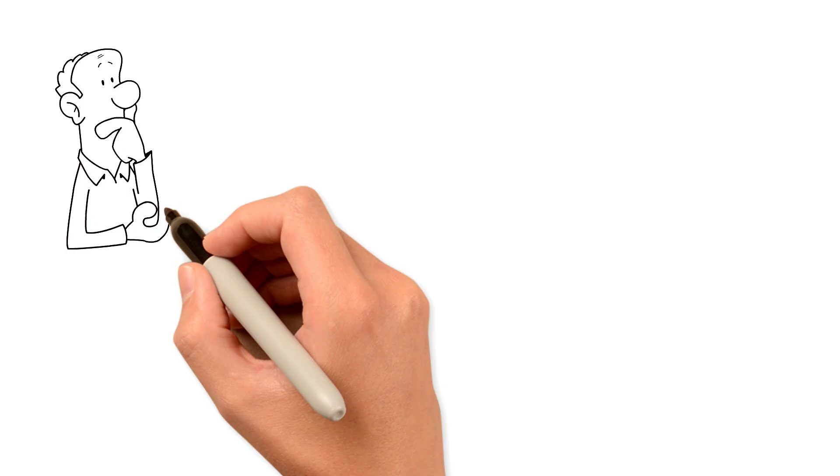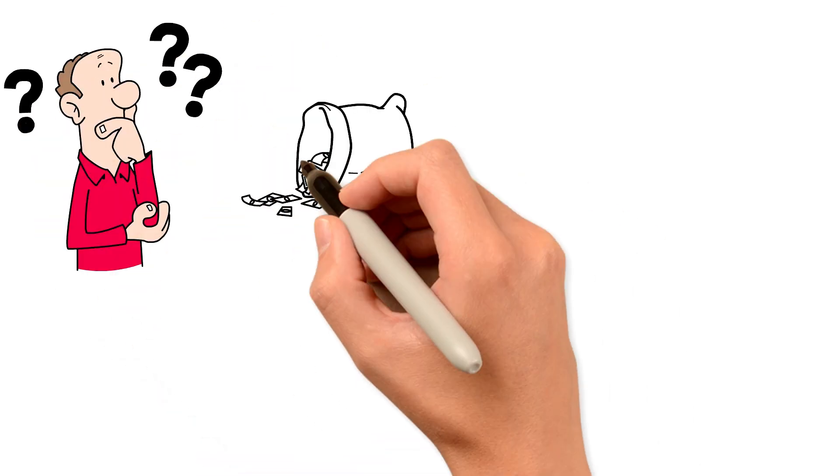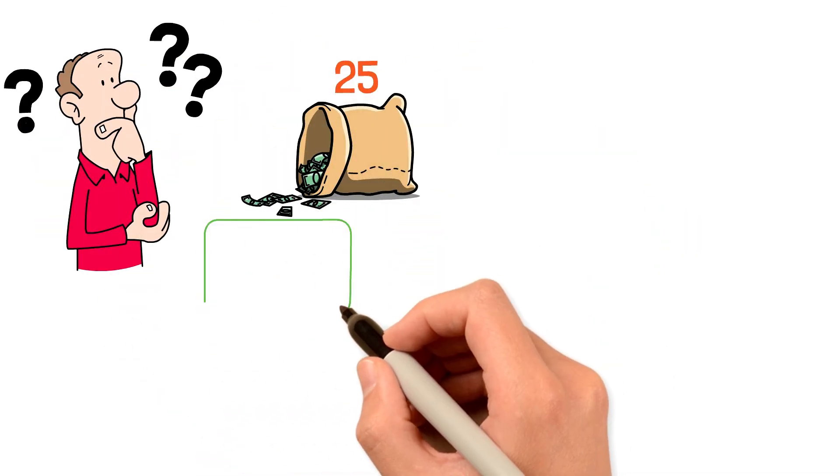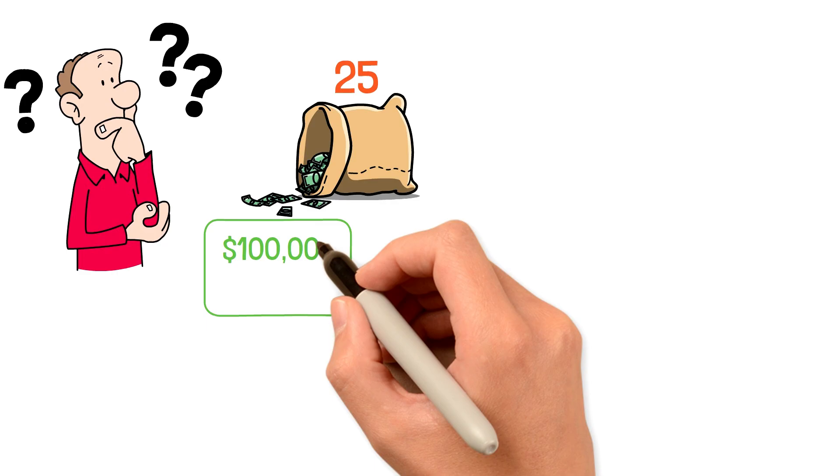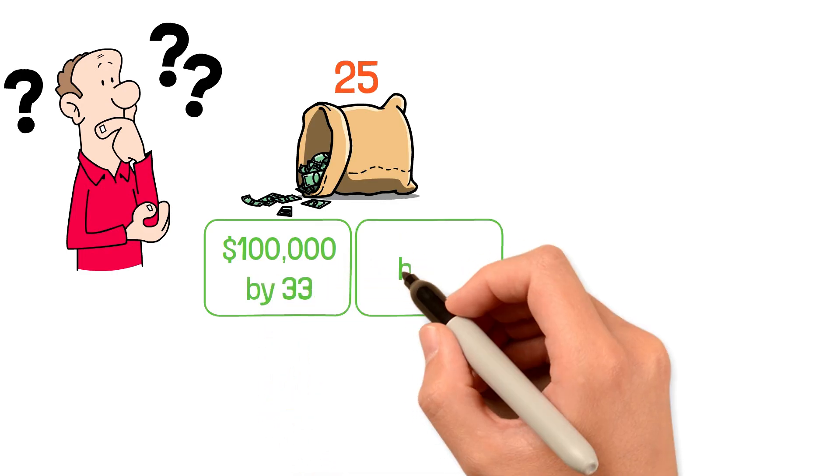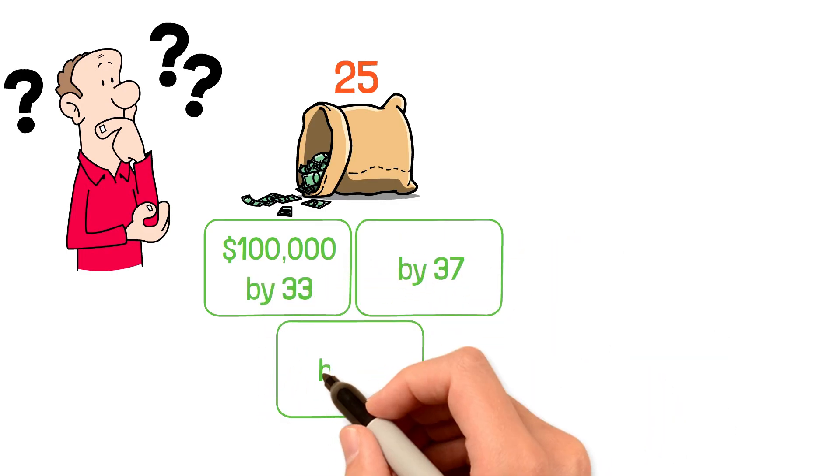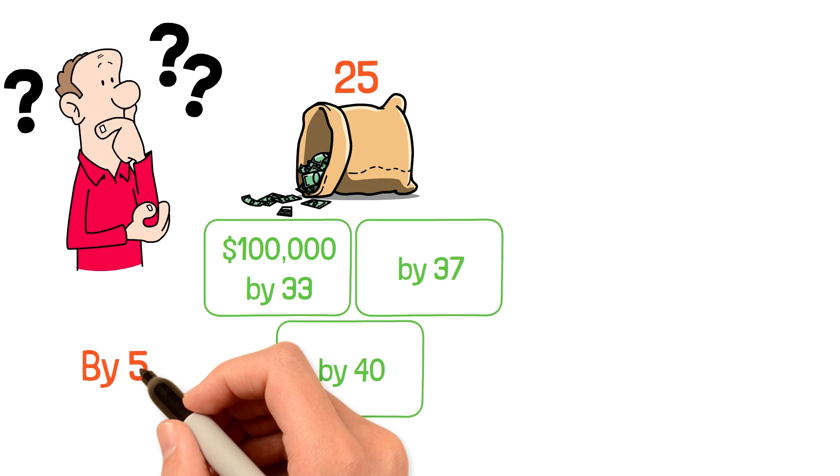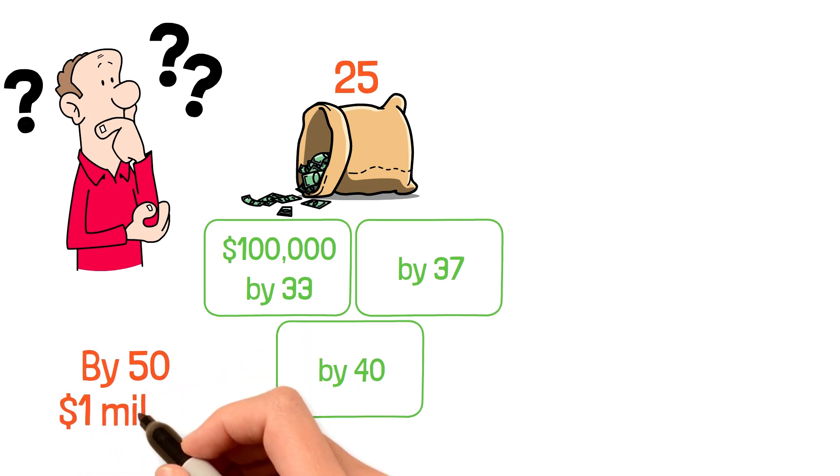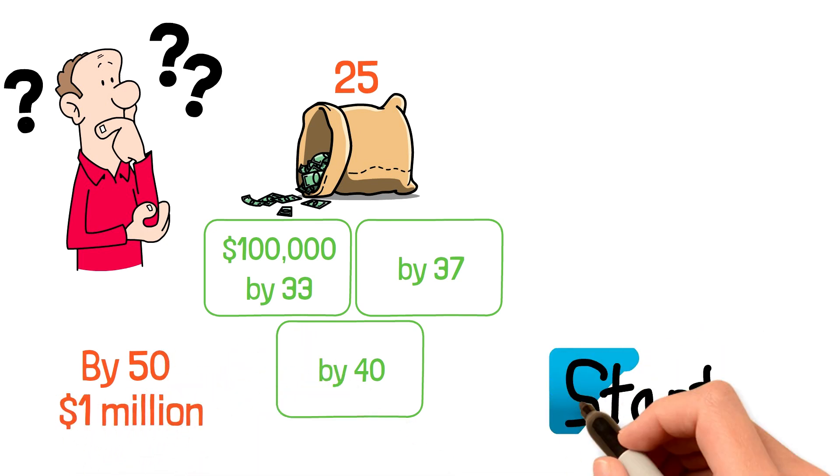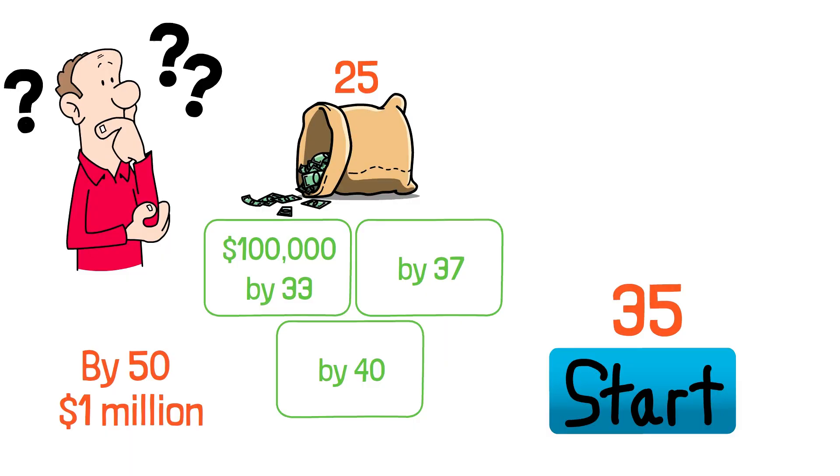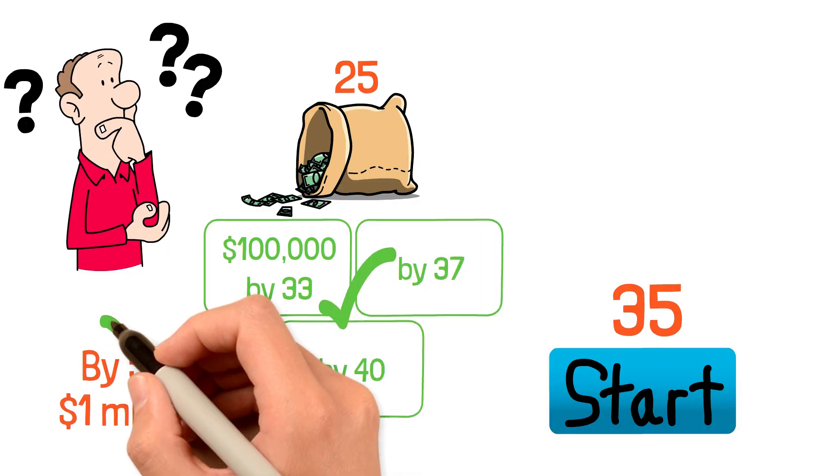The rule also shows why starting early is crucial. If you start investing at 25, you could hit your first $100,000 by 33, your second by 37, and your third by 40. By 50, you could easily have over $1,000,000. But if you wait until 35 to start, you're pushing all those milestones back a decade.